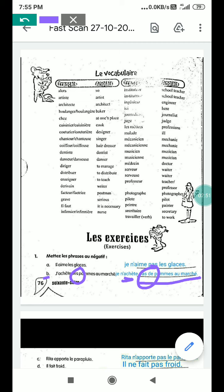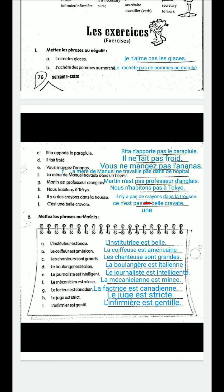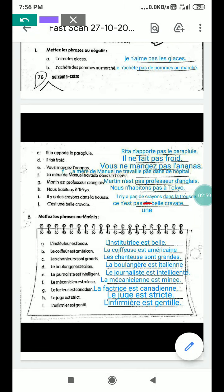C part: Rita apporte le parapluie. Apporter is 'to bring'. Rita is a name. In negative form: Rita n'apporte pas le parapluie — Rita does not bring the umbrella.